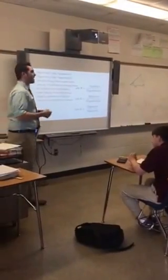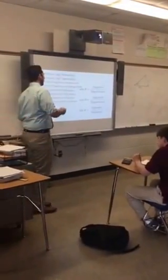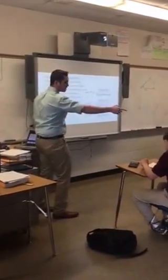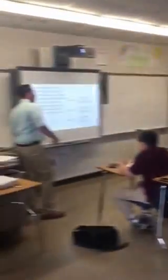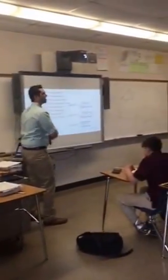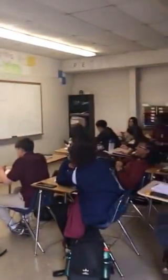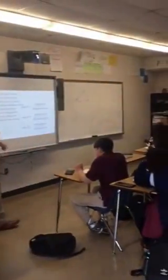Listen up, I'll teach you everything I know. Sine: opposite over hypotenuse. Cosine: adjacent over hypotenuse. Tangent: opposite over adjacent.